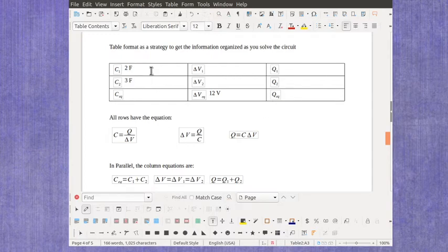In this case, when I look at my first column here, I can find the equivalent capacitance. And in parallel, that's just adding the 2, so that will give me my 5 farads.